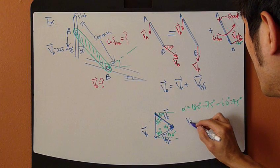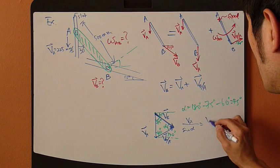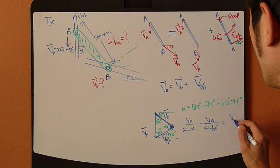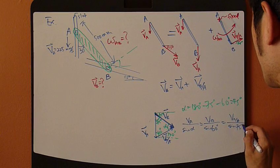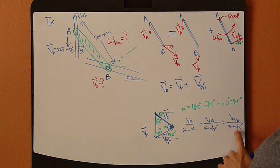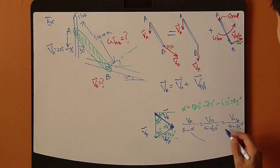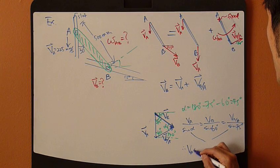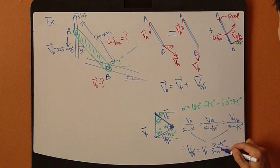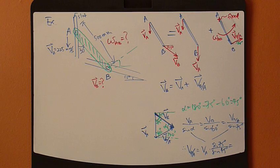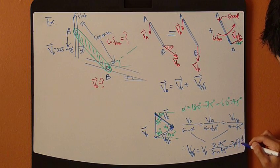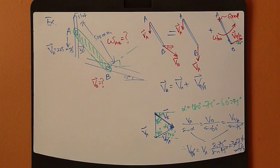So next, apply sine rule. So I have VA over sine alpha equals VB over sine 50 degrees, equals VB/A divided by sine 25 degrees. Since A is known, and I'm interested in this guy right here, VB/A, so I'm going to use these two. So VB/A equals VA times sine 25, divided by sine alpha, which is 45. So now you plug in numbers. It gets you 307.36 mm per second.